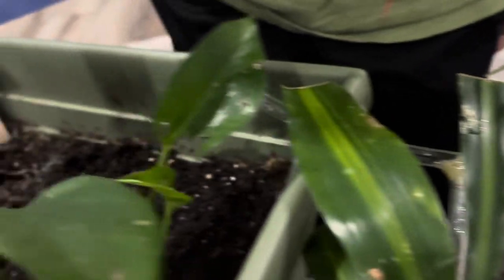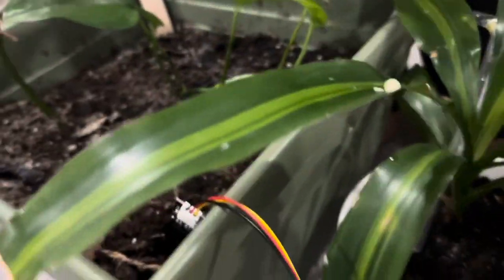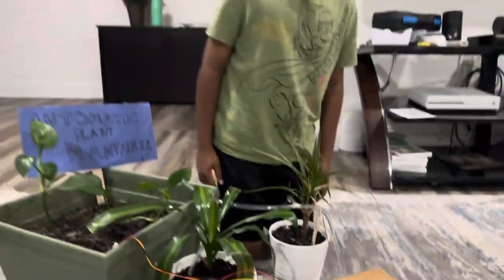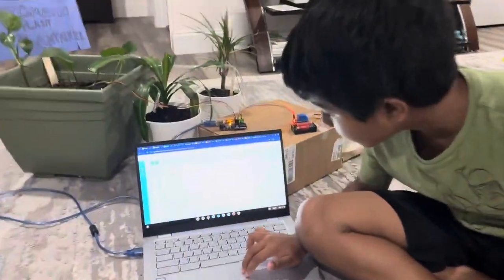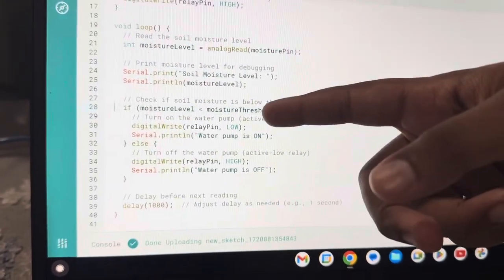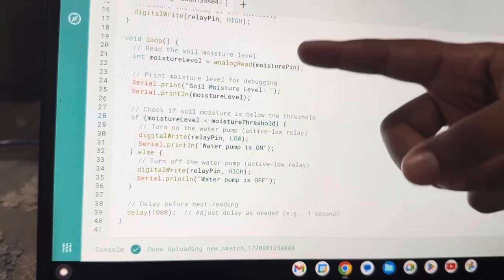And when this thinks that the moisture is enough, it tells everything to stop. And that's it. This is the code. Here you can see this is to see if it turns on and off, depending on the soil moisture.